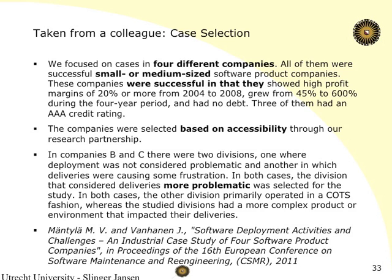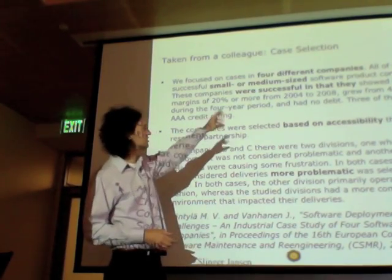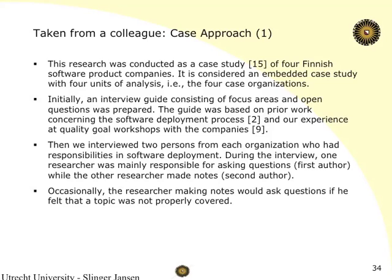What you see here are things they operationalized to say: this is the type of company we're looking at. We're looking at successful companies, and they defined what 'successful' means. Small or medium sized. Why did you select this particular case study? Based on accessibility through their research partnership. They already had access to these companies. Also good — you could easily go: this company has multiple divisions, so you just took the easy way out. But they're saying no — they looked at the ones that were more problematic. I quite like this description.